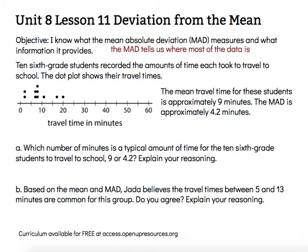Ten sixth grade students recorded the amounts of time each took to travel to school. The dot plot shows their travel times. The mean travel time for these students is approximately nine minutes. The MAD is approximately four and two-tenths minutes.